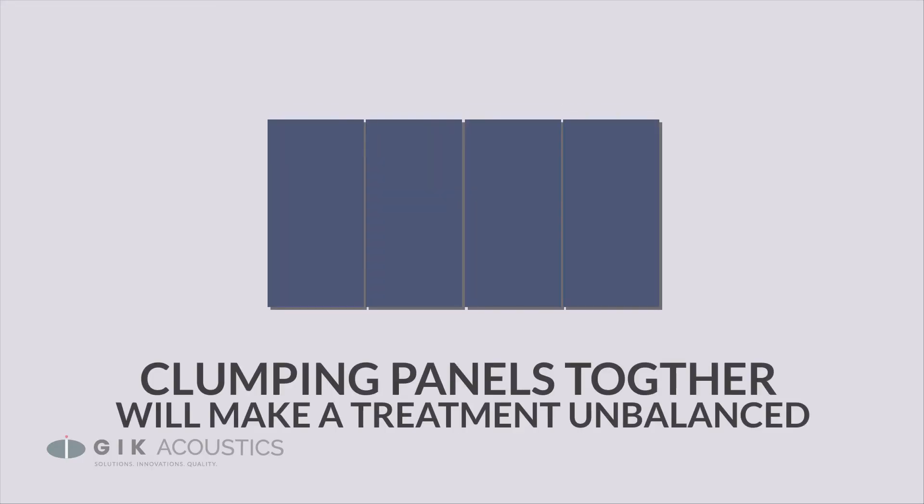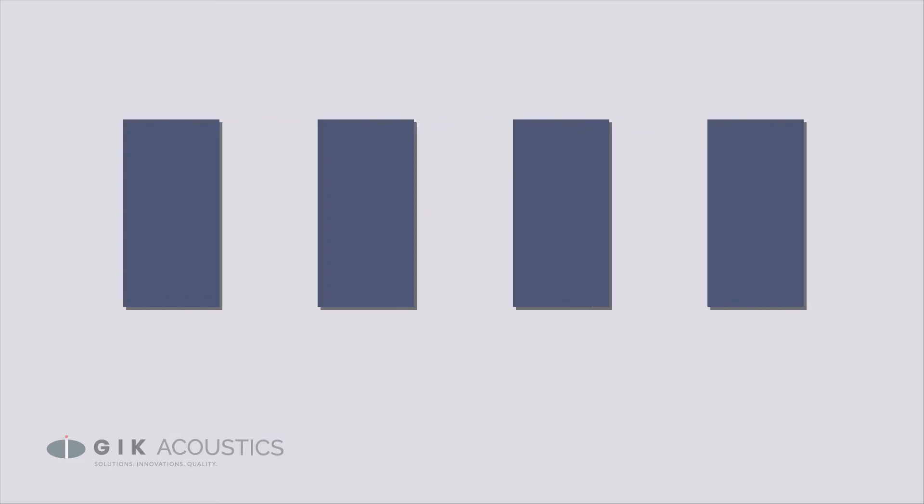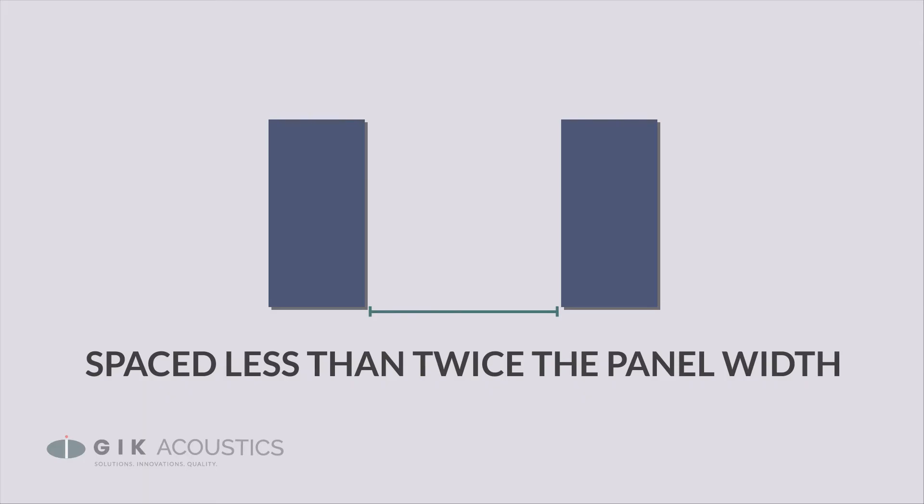For overall echo reduction we'll want to space the panels out evenly along the wall rather than clump them together. This will ensure the room has a nice even sound, but keeping panels no more than twice their width apart will ensure you have enough coverage to effectively treat the wall.